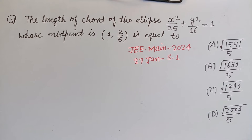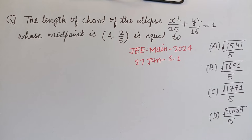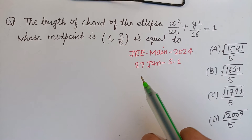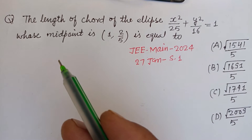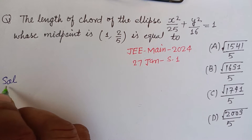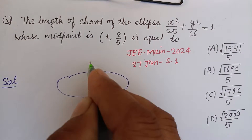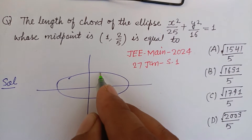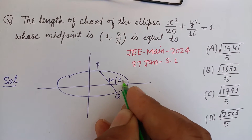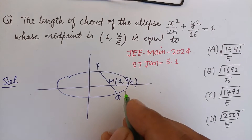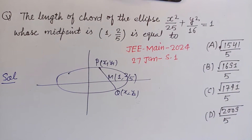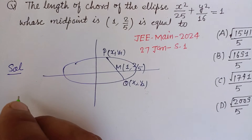Hello viewers, warm welcome to this YouTube channel. This is a question from JEE Main 2024, January 27, Shift 1. The length of the chord of the ellipse x²/25 + y²/16 = 1, whose midpoint is (1, 2/5), is equal to? Here the ellipse is given, its chord is PQ, and its endpoints are (x₁, y₁) and (x₂, y₂) respectively.